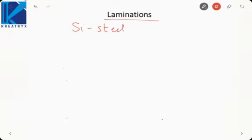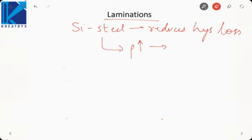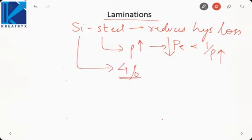Silicon steel reduces hysteresis loss, and adding silicon also increases resistivity, which reduces eddy current losses. However, we cannot add more than 4% silicon because it makes the steel brittle — brittle means it can easily break under mechanical stress. When constructing the core we need to mold it into the desired shape, so if the steel becomes too brittle, the core may crack or break during construction. So we must find other methods to reduce eddy current losses further, such as lamination.